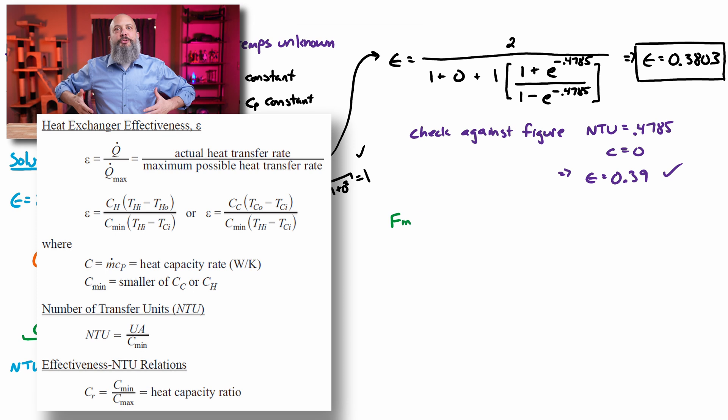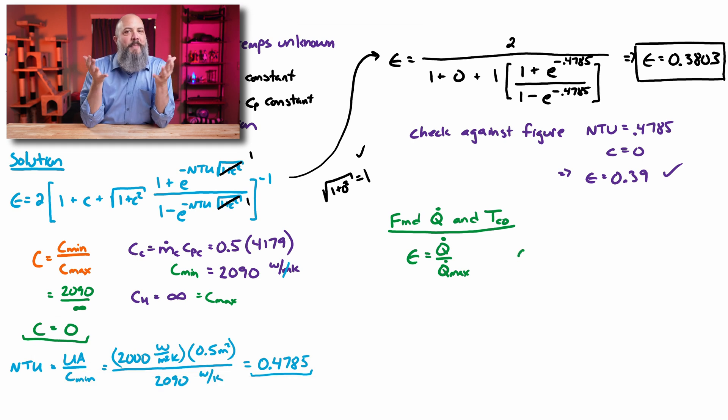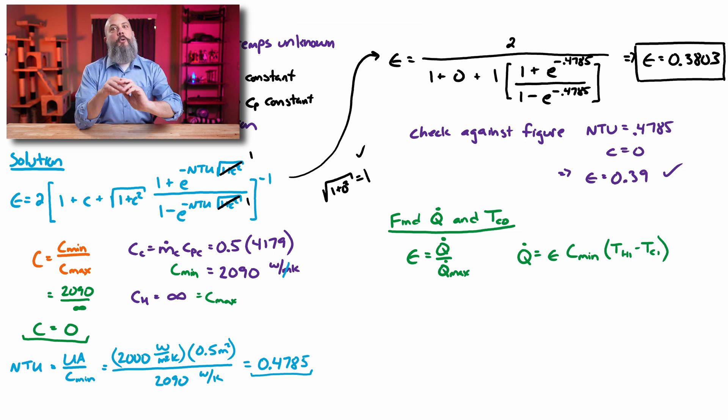So let's go now to rate of heat transfer. Effectiveness is equal to Q dot divided by Q dot max. We just solved for effectiveness, and we're looking for Q dot, the actual rate of heat transfer. So what is the maximum rate of heat transfer? Maximum rate of heat transfer is not defined in the FE reference manual.